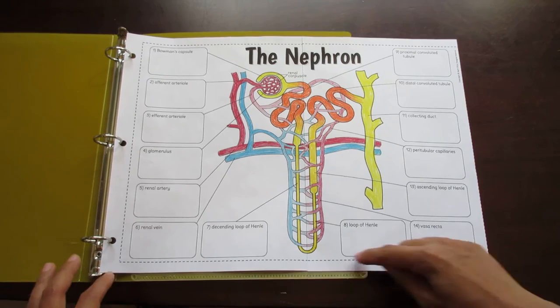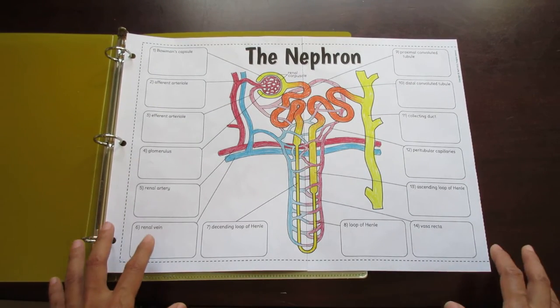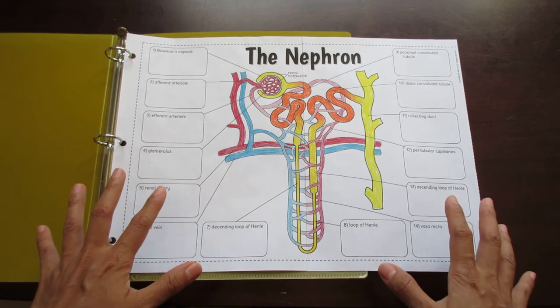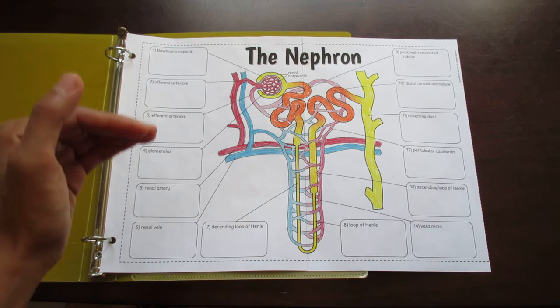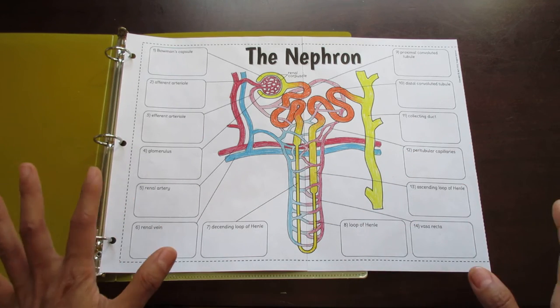For an interactive notebook you would just cut along the dashed lines to create a smaller foldable. Now the nephron is classically a difficult subject to teach. Often it's because the diagrams aren't necessarily great or just leading students step by step through the different process of urine formation is actually quite difficult.